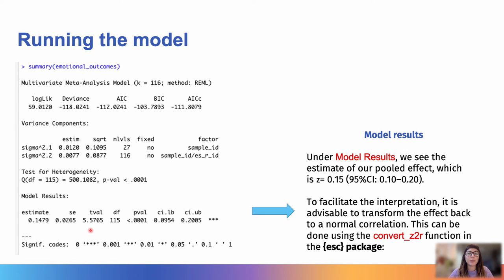Then, importantly, we have the model results. So, here we see that the estimate of our pooled effect is Z 0.15, and we also see the 95% confidence interval here.